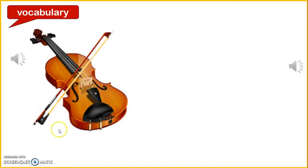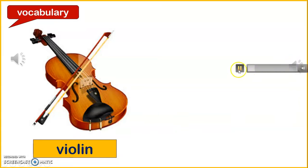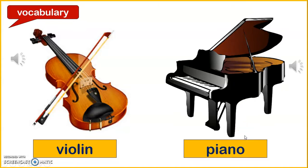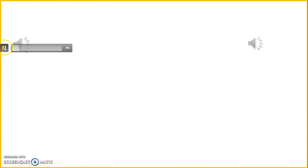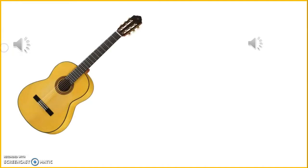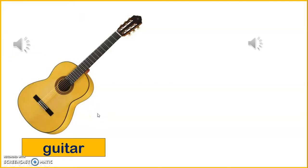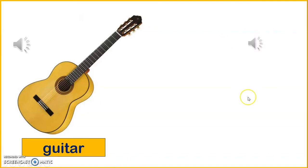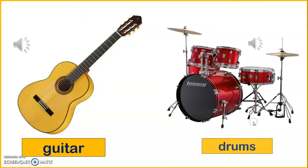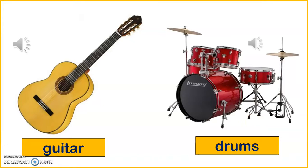That's right — it's a violin. Violin. Now listen again. What is it? That's right, it's a piano. Very good. And now listen. What is it? Yes, it's a guitar. That's right. And what about this one? That's right — they are drums. Very good. So don't forget: violin, piano, guitar, and drums.